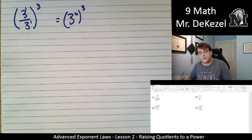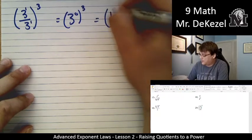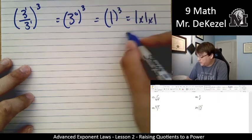And anything to the power of 0 is 1. So we would be able to say that this is 1 to the power of 3, which is 1 times 1 times 1, which we know equals 1.